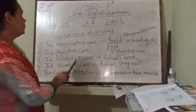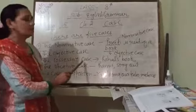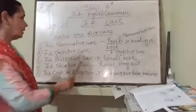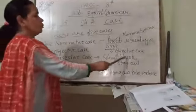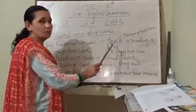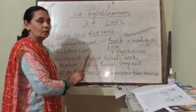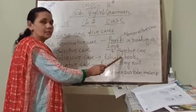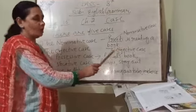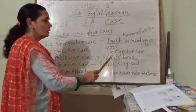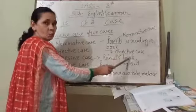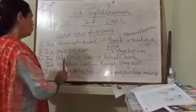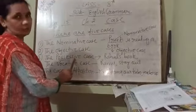Now come to the third: the possessive case. Possessive case shows a relation. Like 'Rahul's book' — this is the possessive case. An apostrophe shows possession. 'Rahul's book' means the book belongs to Rahul. The book's relation is to Rahul — that is the possessive case.